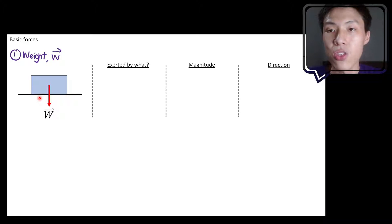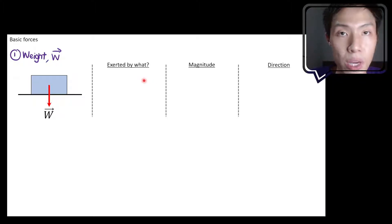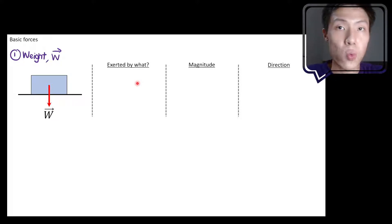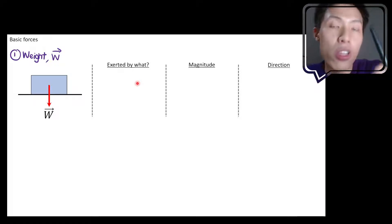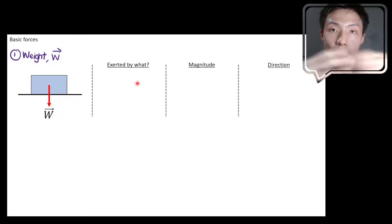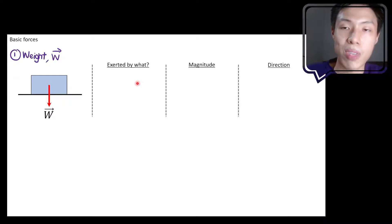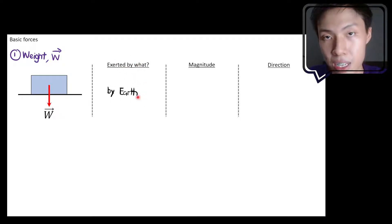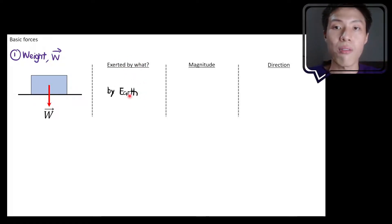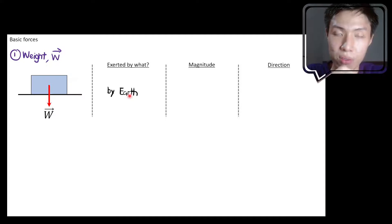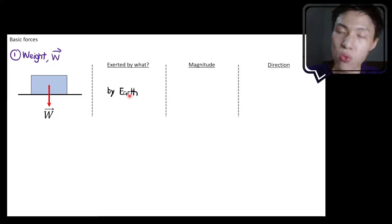Let's study the characteristics of weight. If an object experiences a gravitational force, we call that gravitational force its weight. Who or what exerts the gravitational force on the object? Since it's gravity, it's always related to Earth. In this case, your weight is exerted by Earth, because you are standing near Earth and it exerts a gravitational force pulling you down towards the ground.